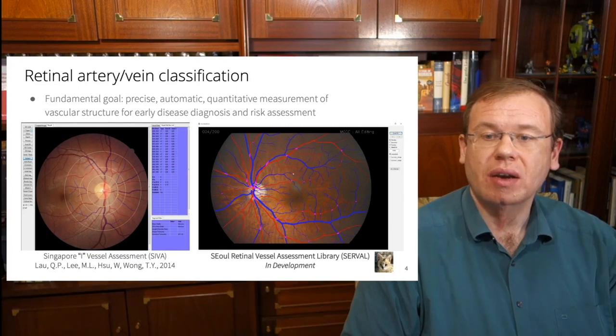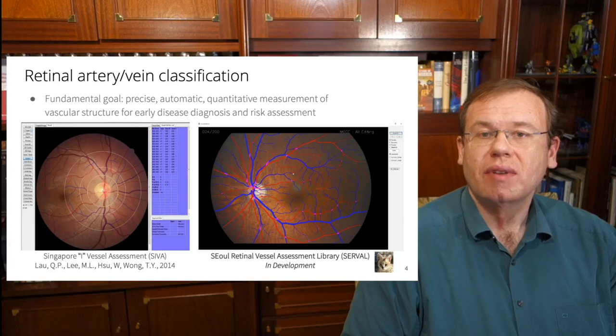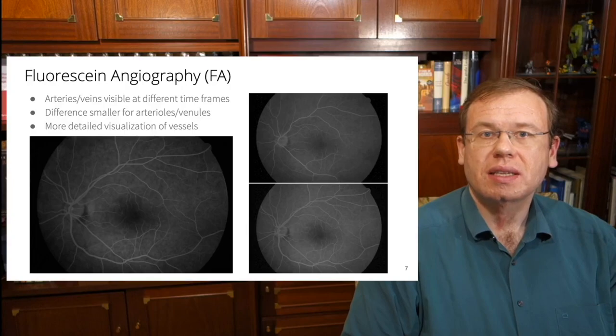So what they want to have here is an analysis of the retinal veins, and they are using fundus images. So here you can see an overlay of the ground truth. And the problem is to identify whether the vessel is an artery or a vein. In order to alleviate the problem a little bit, they also use, in addition, fluorescence angiography.